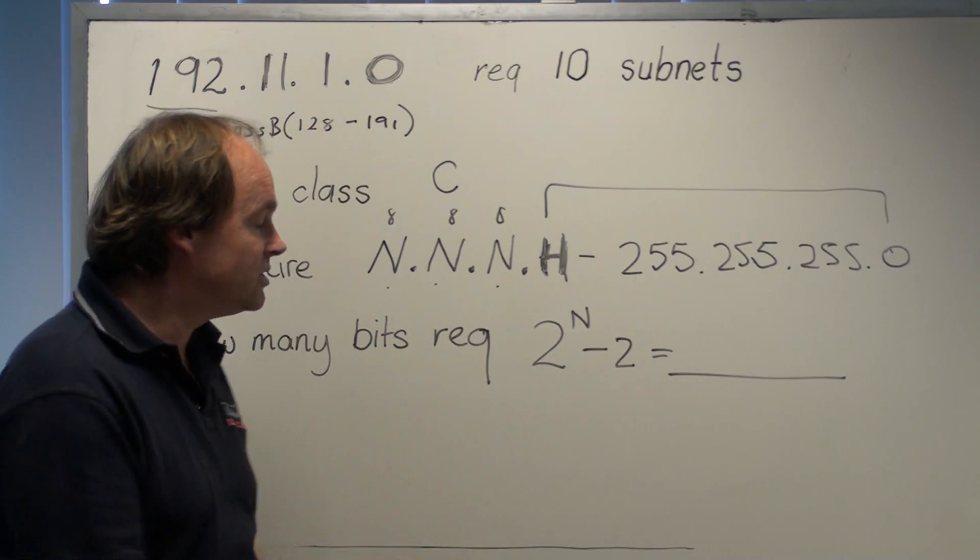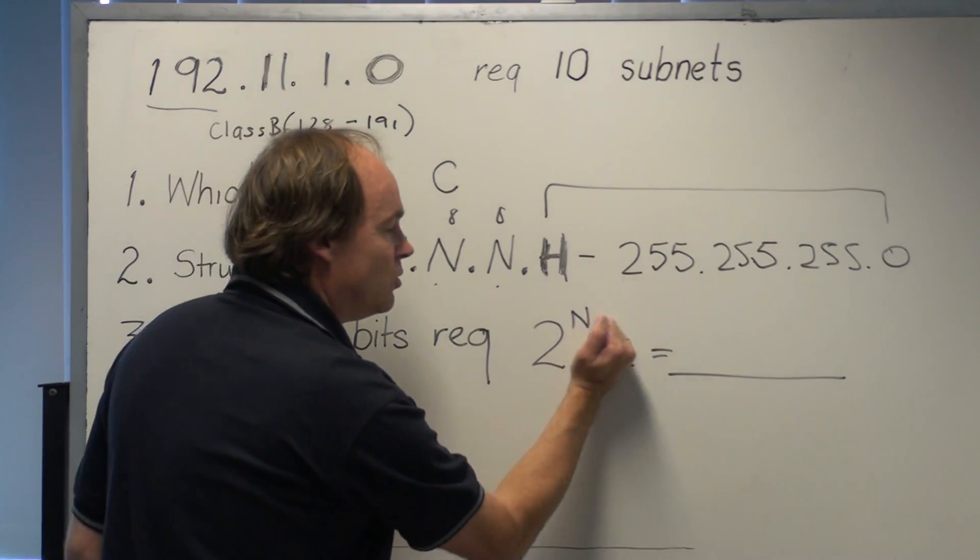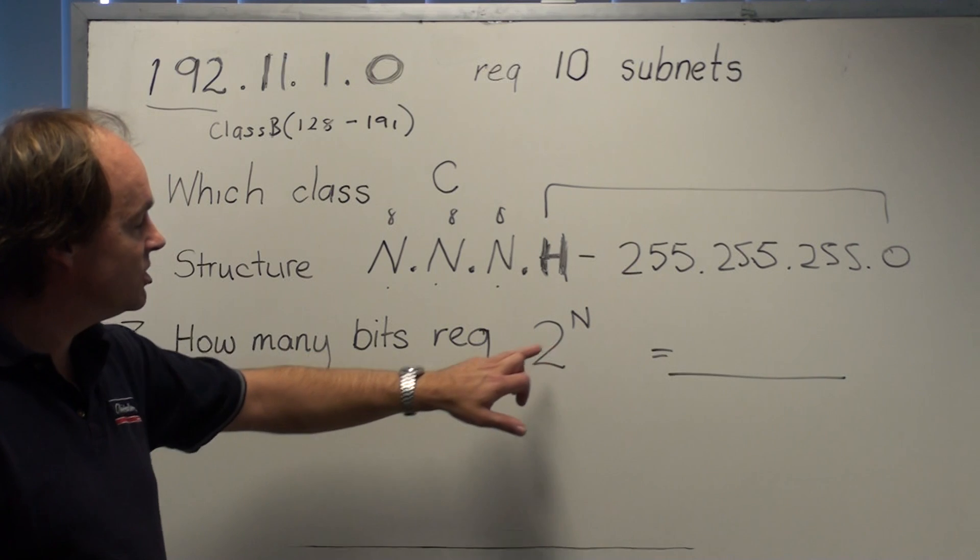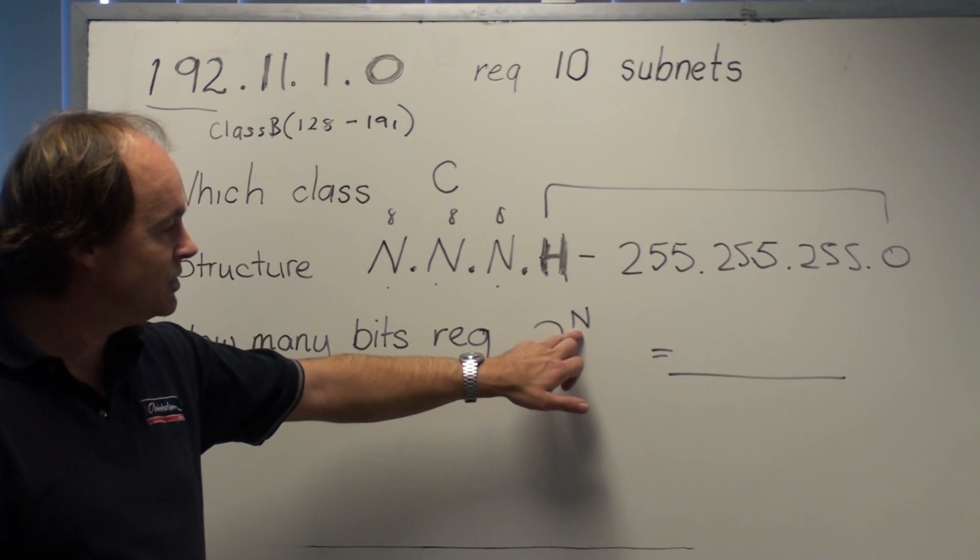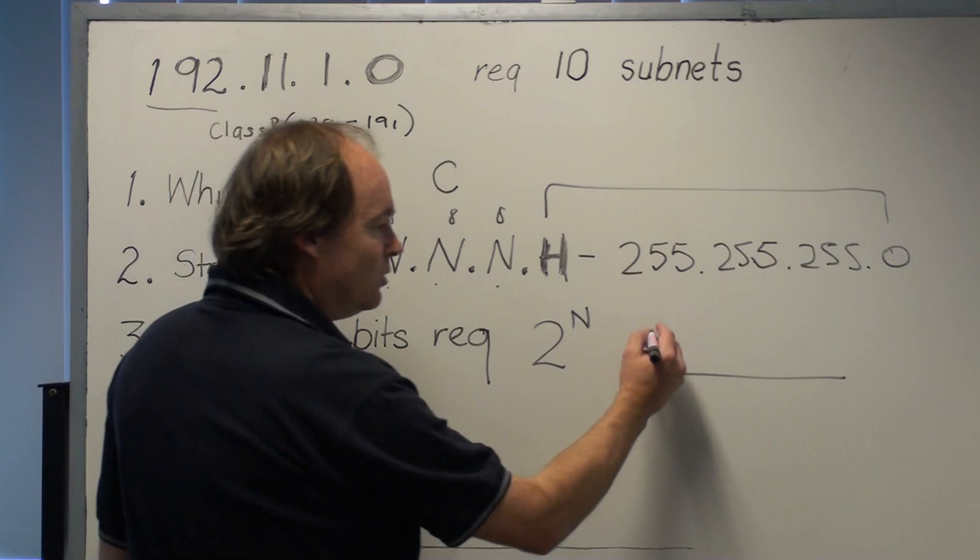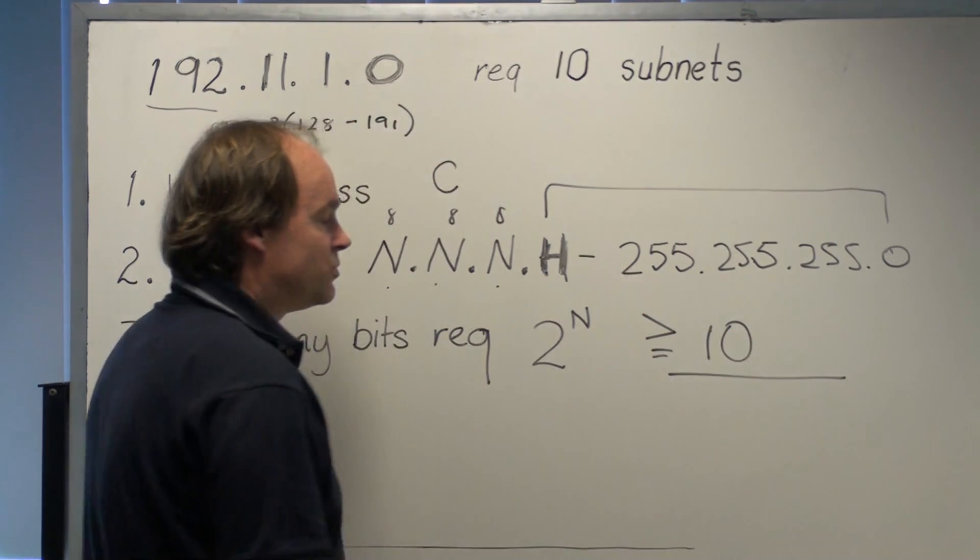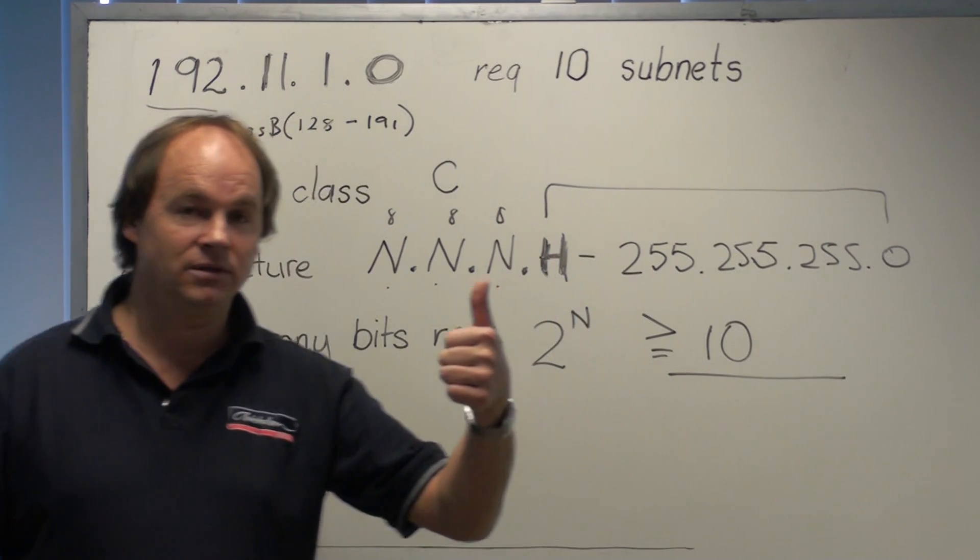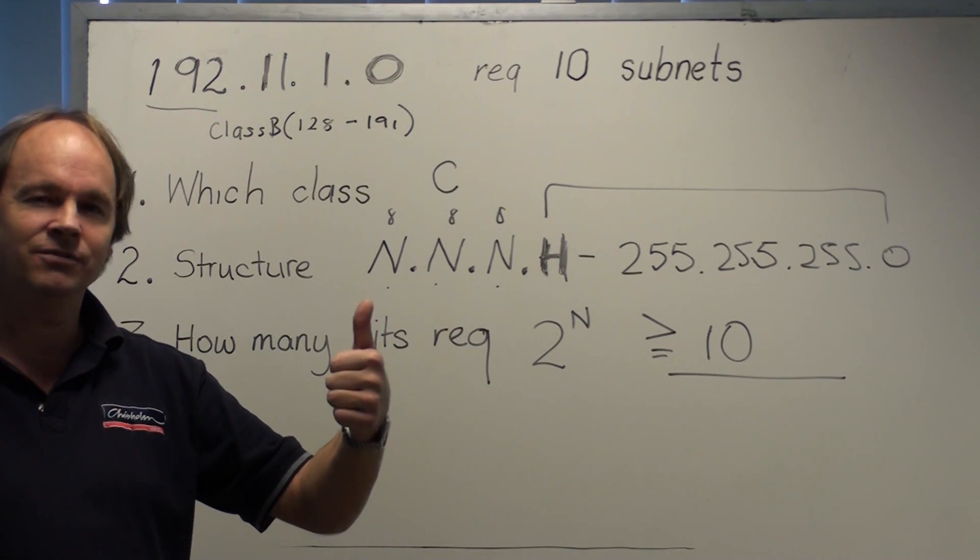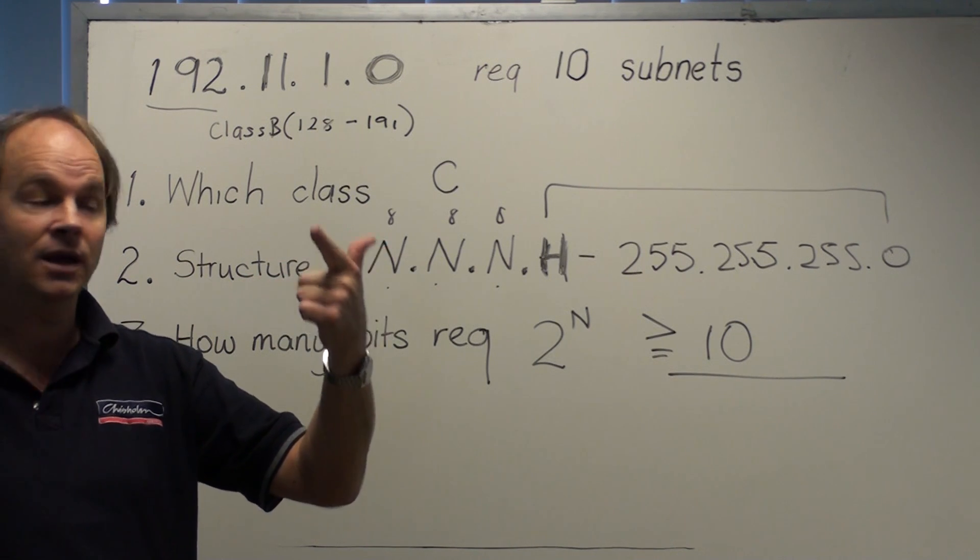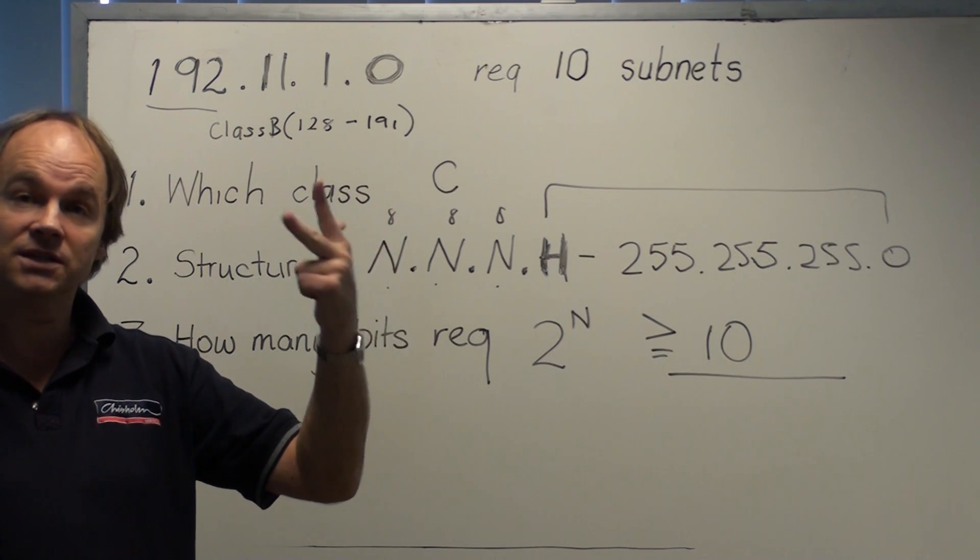So let's not even consider taking 2 off as we used to teach. So in this case we need to know what number here in the N position will be equal to or greater than 10. So we can go through, well 1 bit gives us 2, that's not enough. 2 bits gives us 4, so I'm just going 2, 4, doubling 8. 3 bits gets us 8.